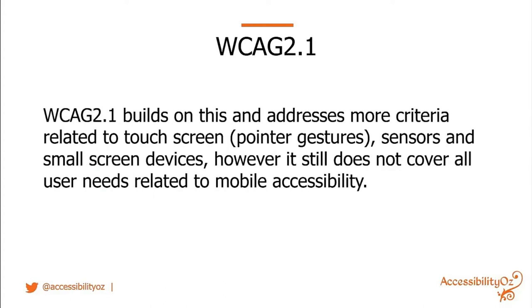WCAG 2.1 builds on this, talking about pointer gestures, sensors, and small screen devices. However, as a committee we felt it didn't go far enough. Touch target size — which requires a specific touch target size on mobile — is in WCAG 2.1 but at the AAA level, which mostly means it gets ignored. So at the end of 2018 we convened two committees for 2019: one for mobile site testing and one for native app testing.